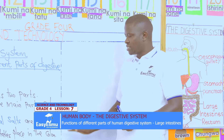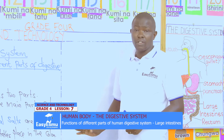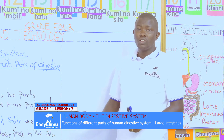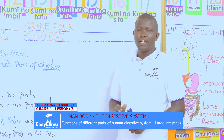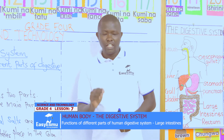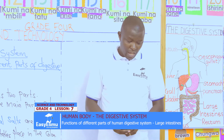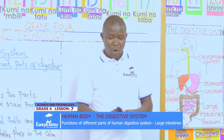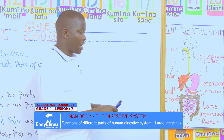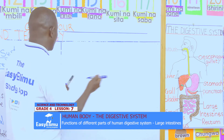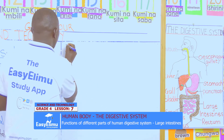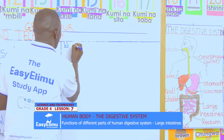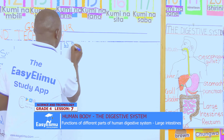No digestion takes place in the colon. Remember, digestion ends in the ileum. And now, if there is no digestion, what about the other part of the large intestine? That brings us to part B, which is the rectum.